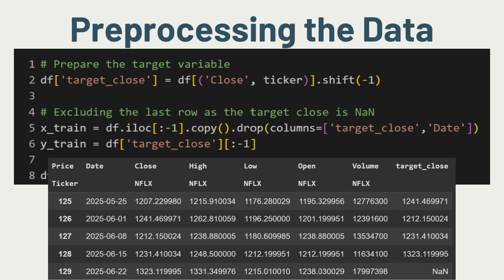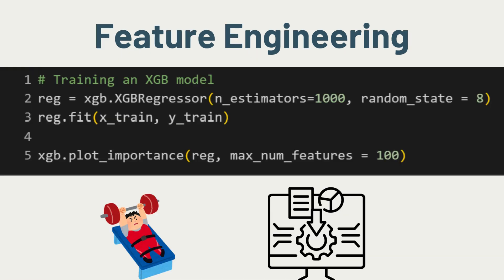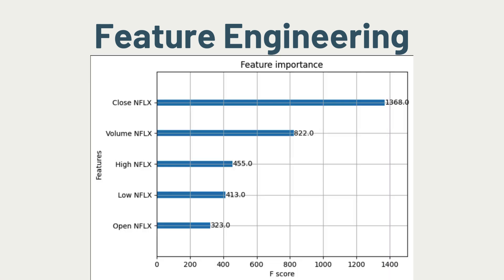As the latest date's target closing price is not available, we will remove the last row from the training data. We will set up the XGBoost model with a fixed random state, then fit and train the model on the training data. The reason for doing this with the initial features is so that after training we will be able to plot the feature importance and do more targeted feature engineering based on trading indicators. Based on the feature importance plot, we can see that the closing price is the most important feature, followed by the traded volume.